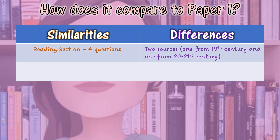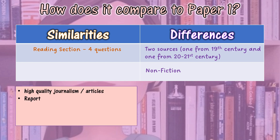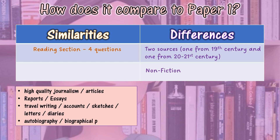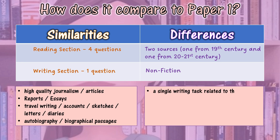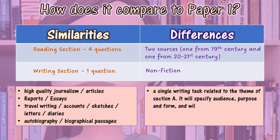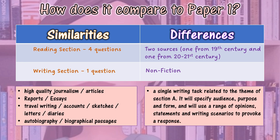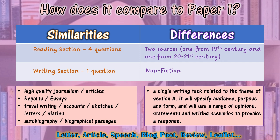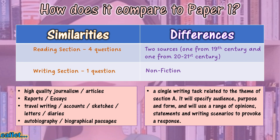Another difference is these two sources are non-fiction, so they can be from genres such as high-quality journalism, articles, reports, essays, travel writing, accounts, sketches, letters, diaries, autobiography, and biographical passages. Another similarity is the writing section has one question, and this question is in relation to the theme or topic of Section A. It will specify audience, purpose, and form, and will use a range of opinions, statements, and writing scenarios to provoke a response. This again will be non-fiction — you could be asked to write a letter, article, speech, blog post, review, or leaflet.